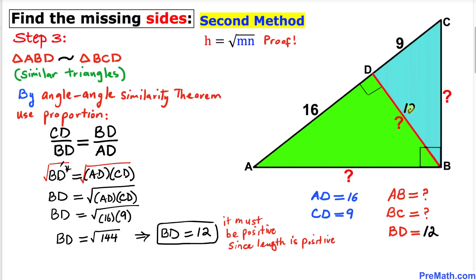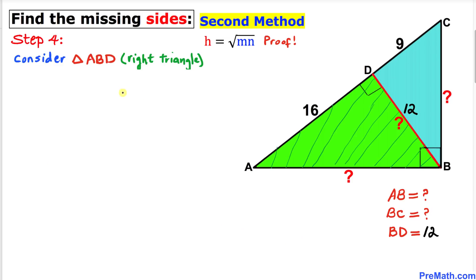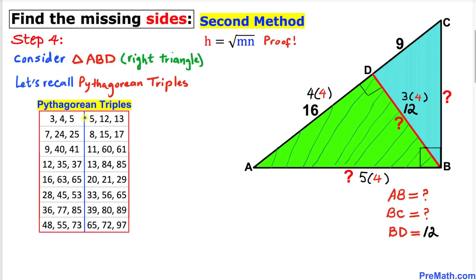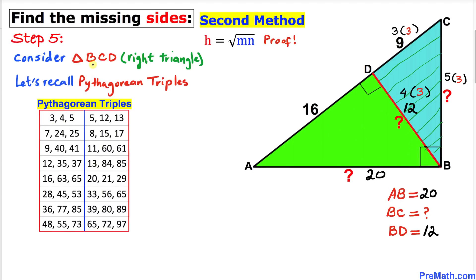Now let's focus on triangle ABD again and recall Pythagorean triplets. We can see that 16 equals 4 times 4 and 12 equals 3 times 4. Using the 3-4-5 triple, the unknown side becomes 5 times 4, so side AB is 20 units.